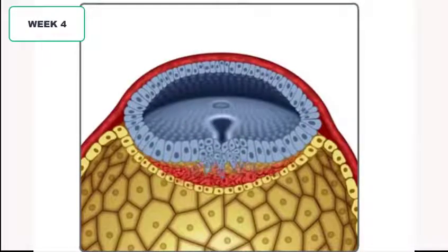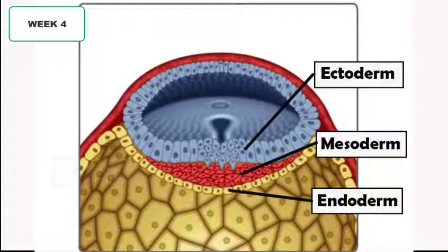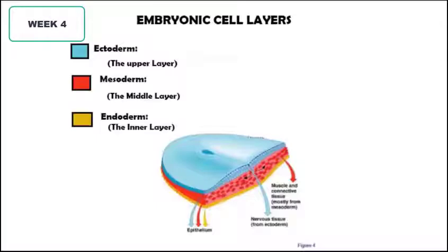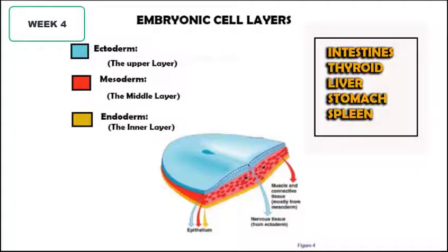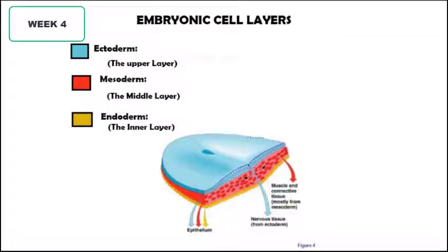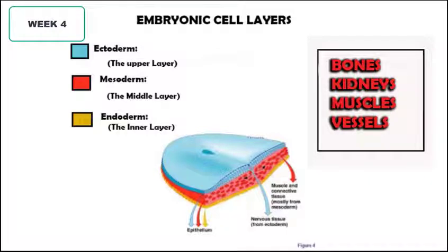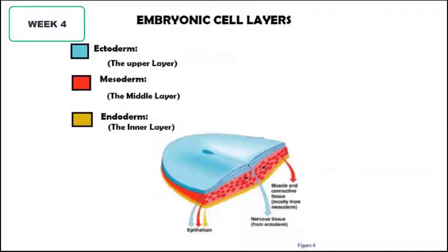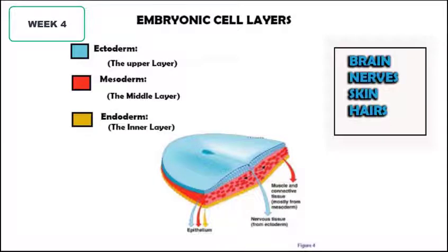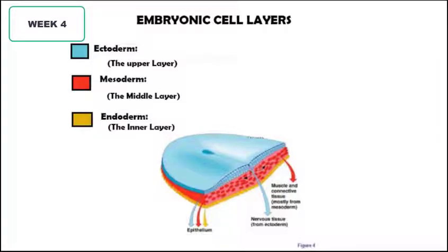The lowest layer — the endoderm — contains cells that will make the intestines, thyroid, liver, stomach, and pancreas. The mesoderm in between contains cells that will make the muscles, bones, kidneys, and vessels. While the ectoderm upward is composed of cells that will give rise to the brain, the skin, hair, and nerves.